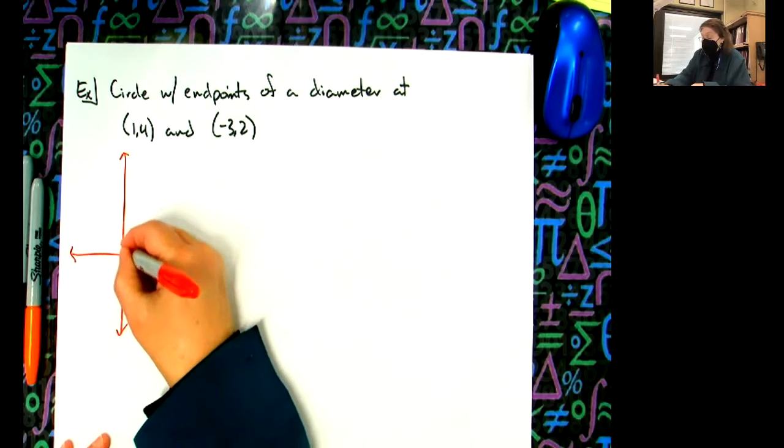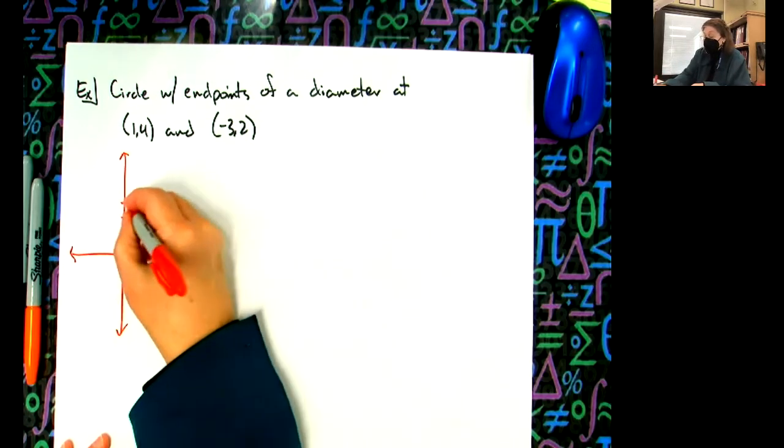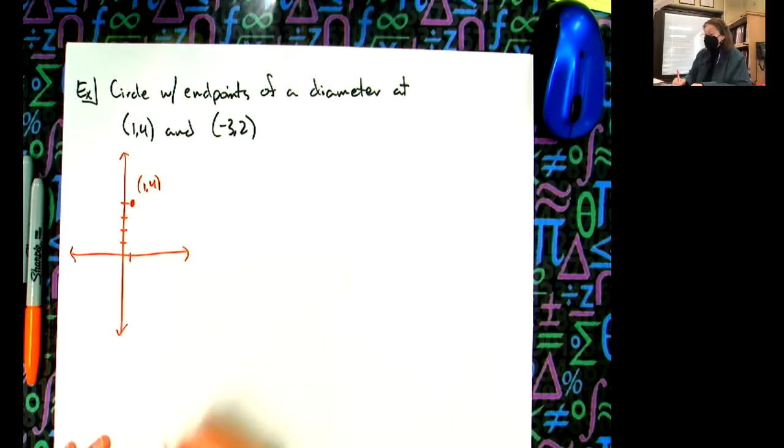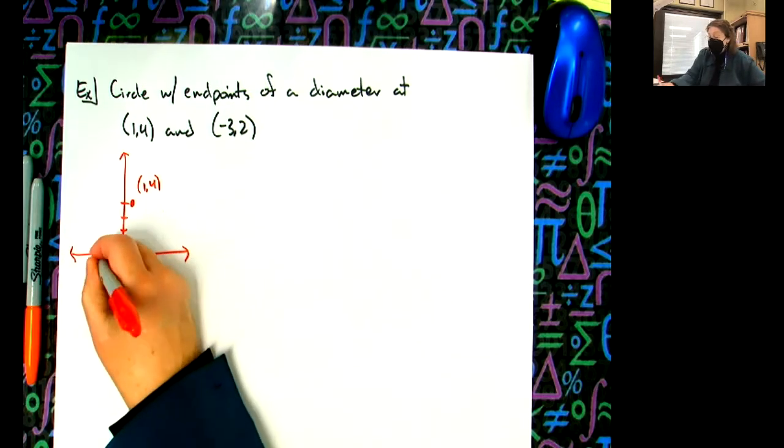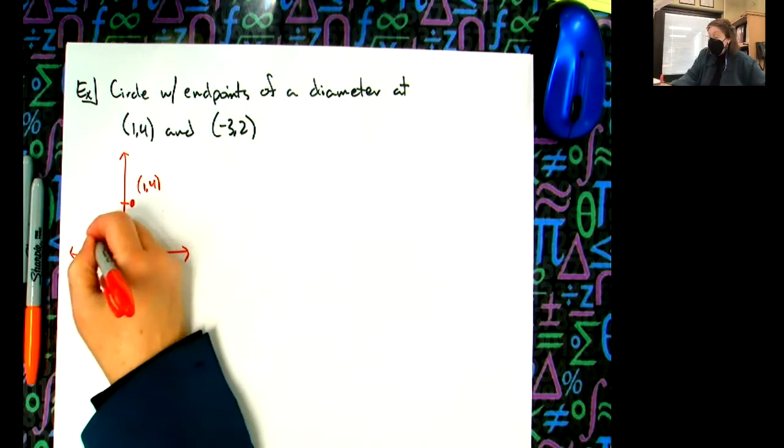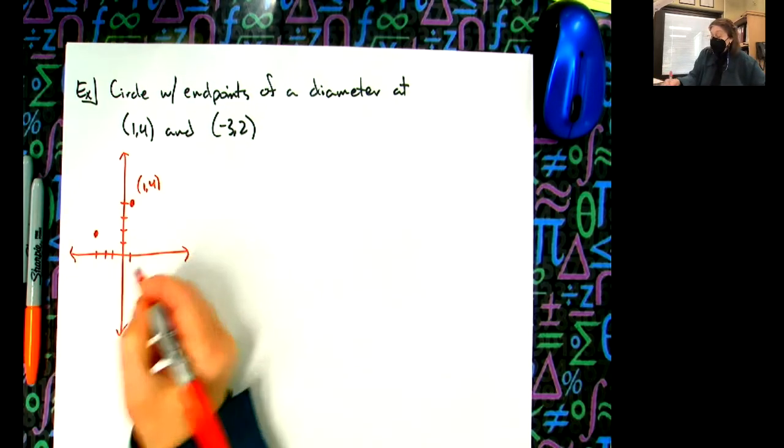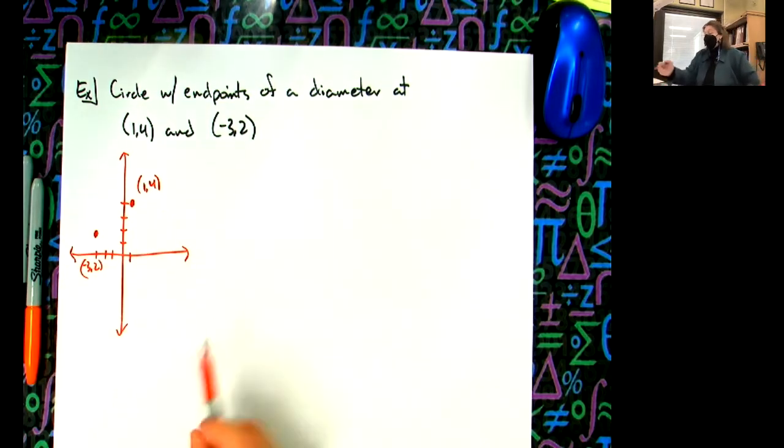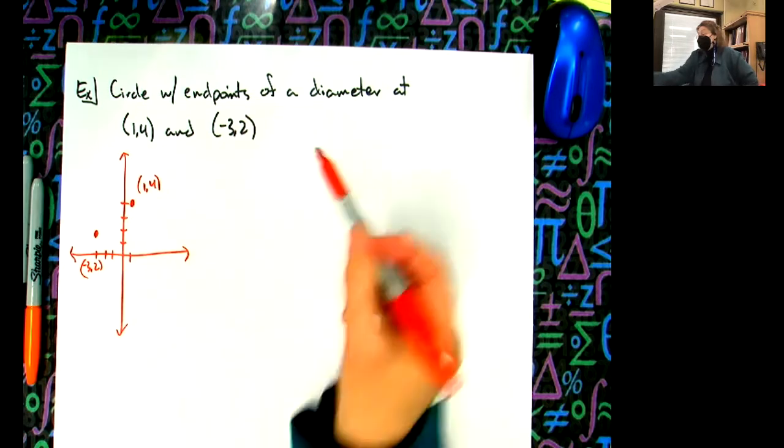So (1,4) is like right there. And (-3,2)... one, two, three... there. So there's (-3,2). And it says the circle with endpoints of the diameter.